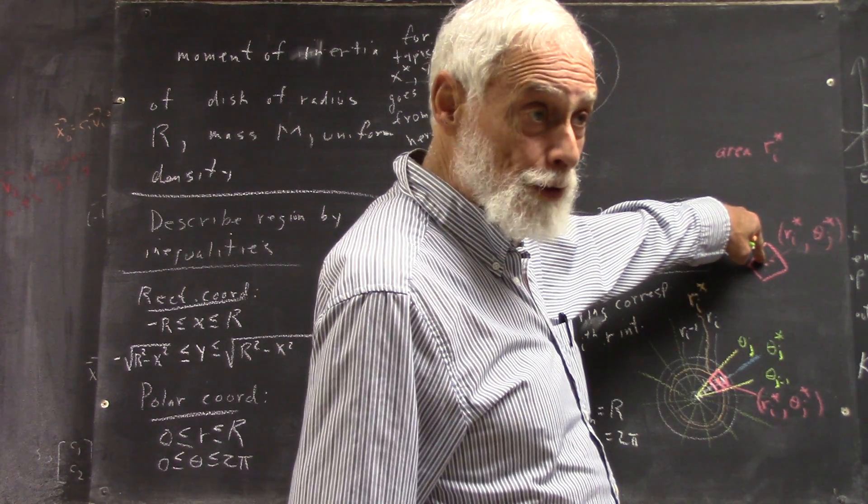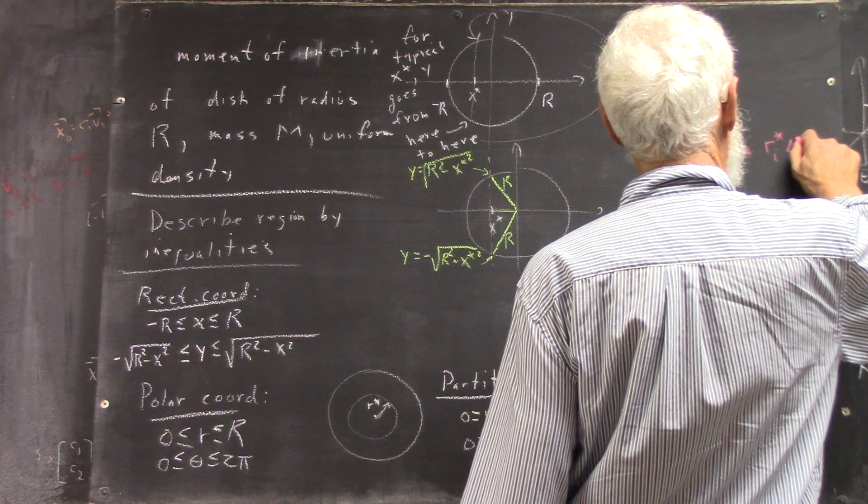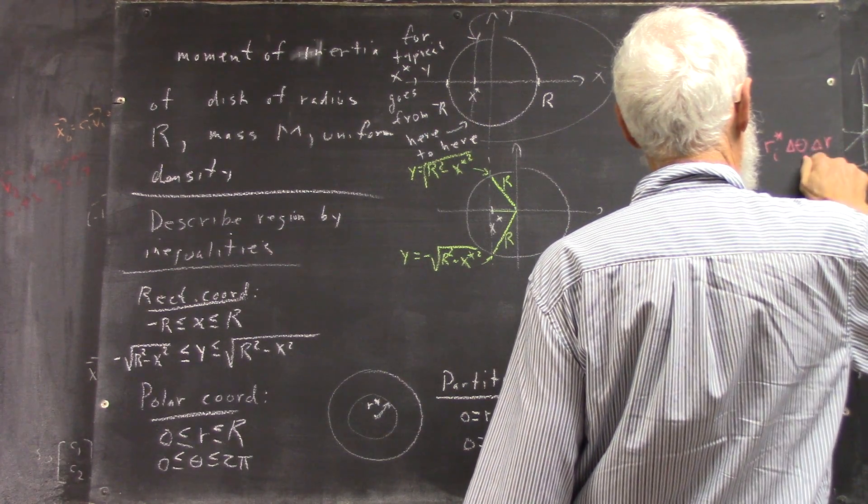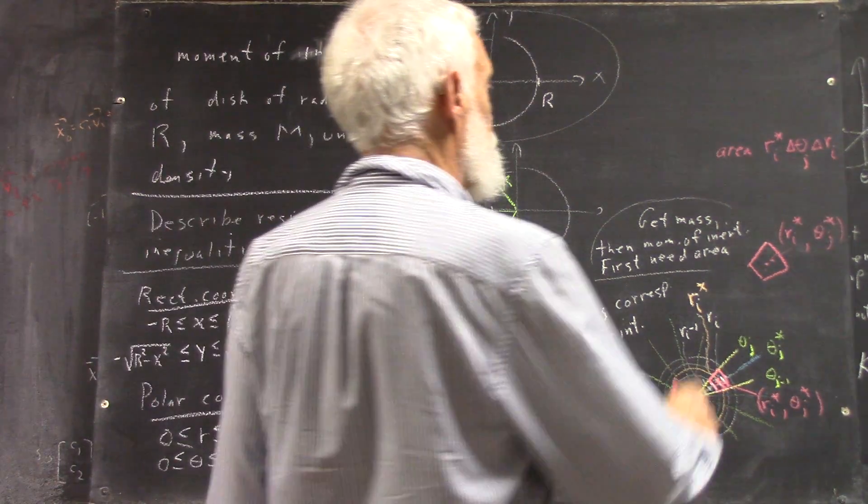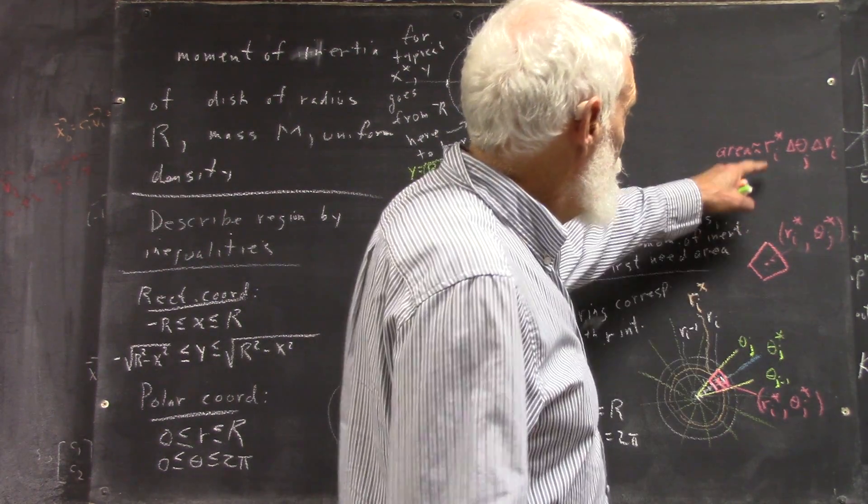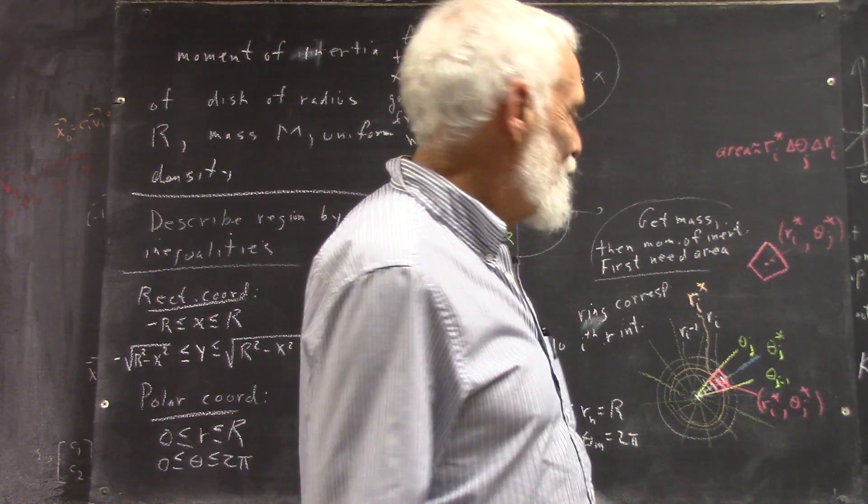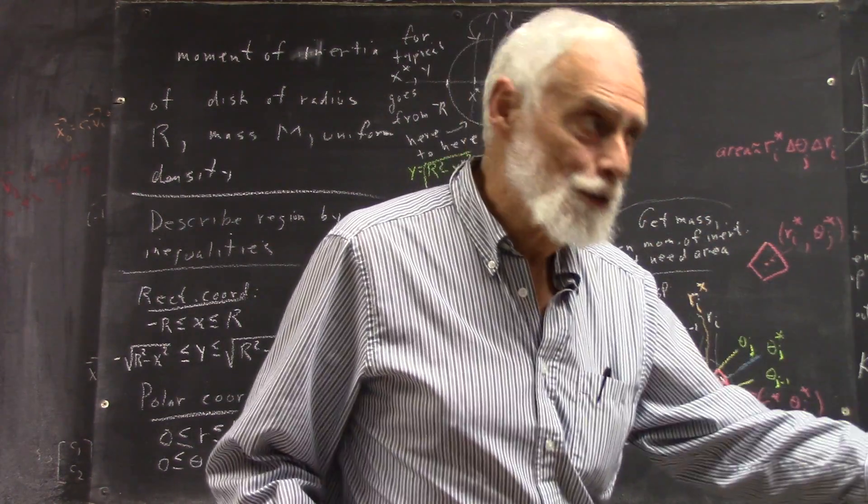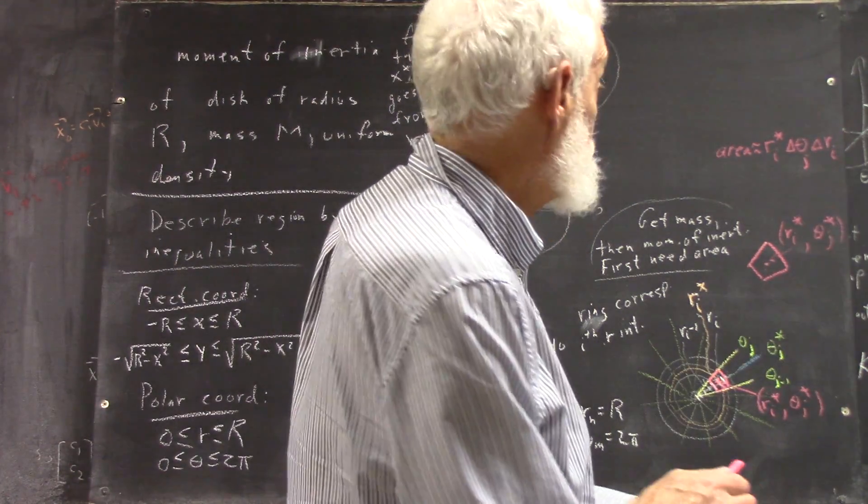Remember, everything goes to the sample point, and delta theta sub J delta R sub I. Okay? So that's the approximation, of course. Why R I delta theta sub J? Because you're on the arc of a circle, and to get the arc distance, you multiply the radius by the angle, right? That's just your definition of the radian. Okay?